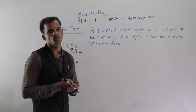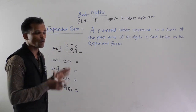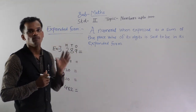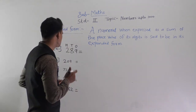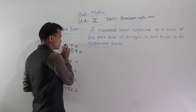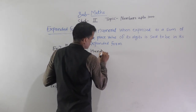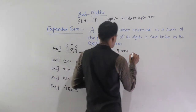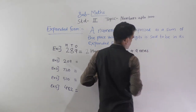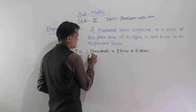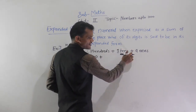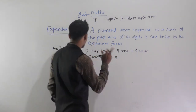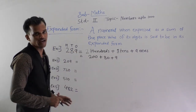Now we will see some examples so you will understand. We will solve this example — how to write this number into expanded form. Write the place value of each digit in the form of a sum. This 2 comes at the hundreds place. So, 2 hundreds plus 8 tens plus 9 ones. We can write in numerals: 200 plus 80 plus 9. That is the expanded form of 289.